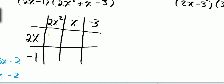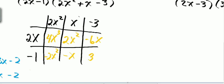2x squared times 2x is 4x cubed. Here I have 2x times x is 2x squared. 2x times negative 3 is negative 6x. Here I have negative 1 times 2x squared is negative 2x squared. Negative 1 times x is negative x. And negative 1 times negative 3 is positive 3. I pull out each of these inside terms: 4x cubed plus 2x squared minus 6x minus 2x squared minus x plus 3.